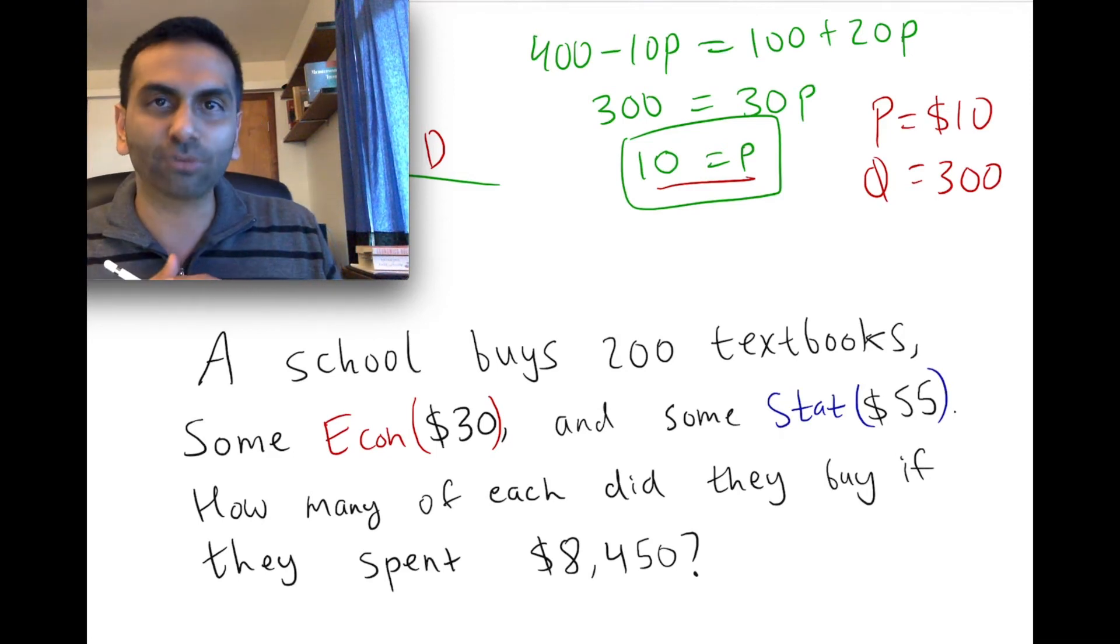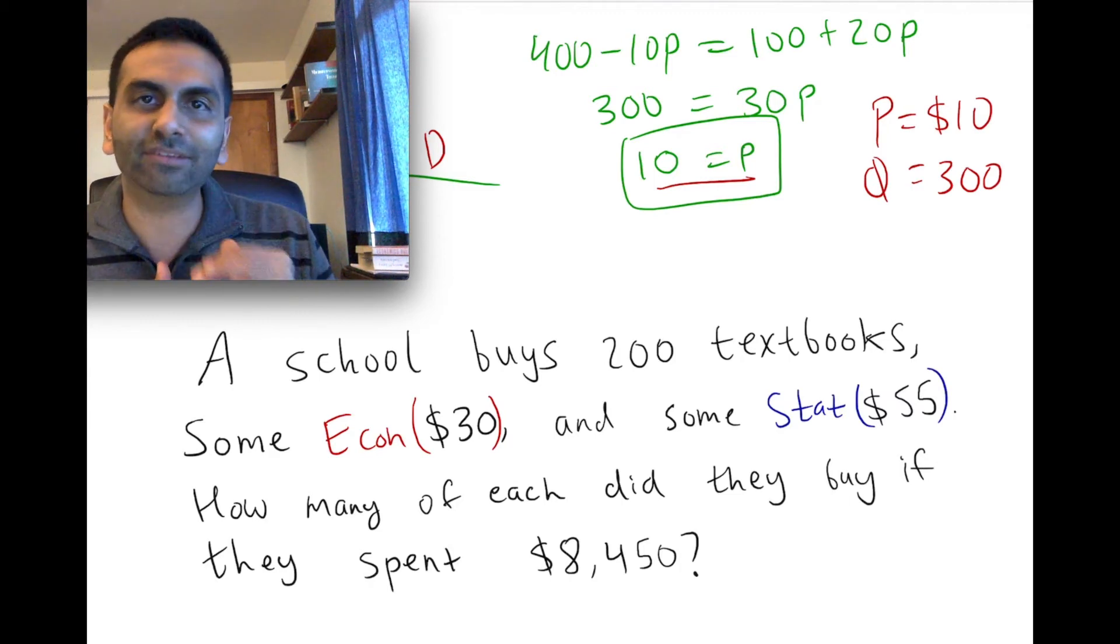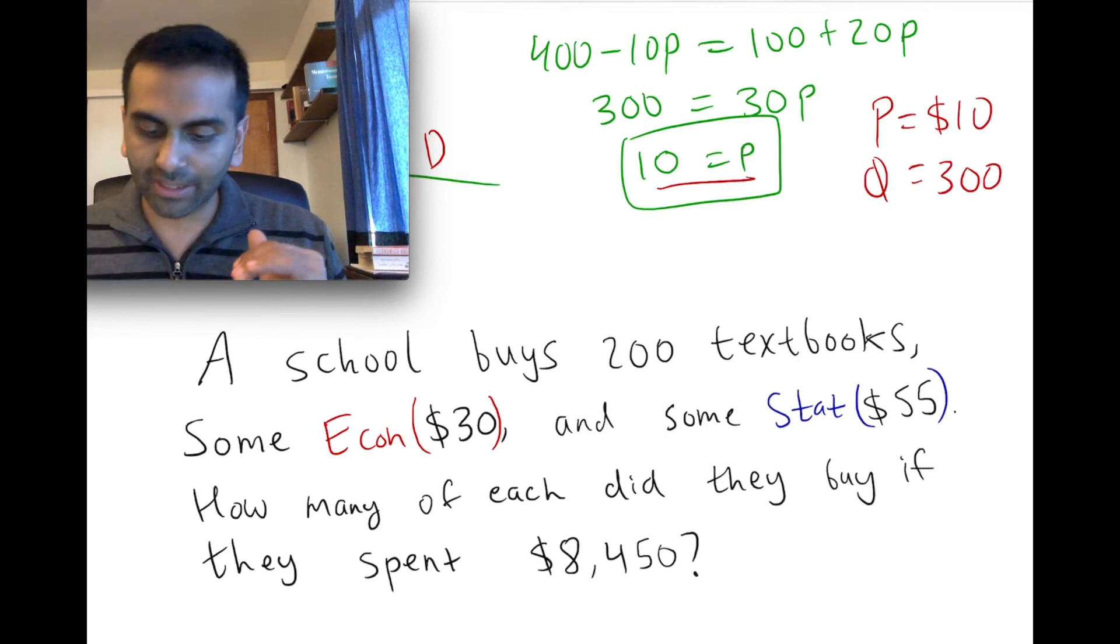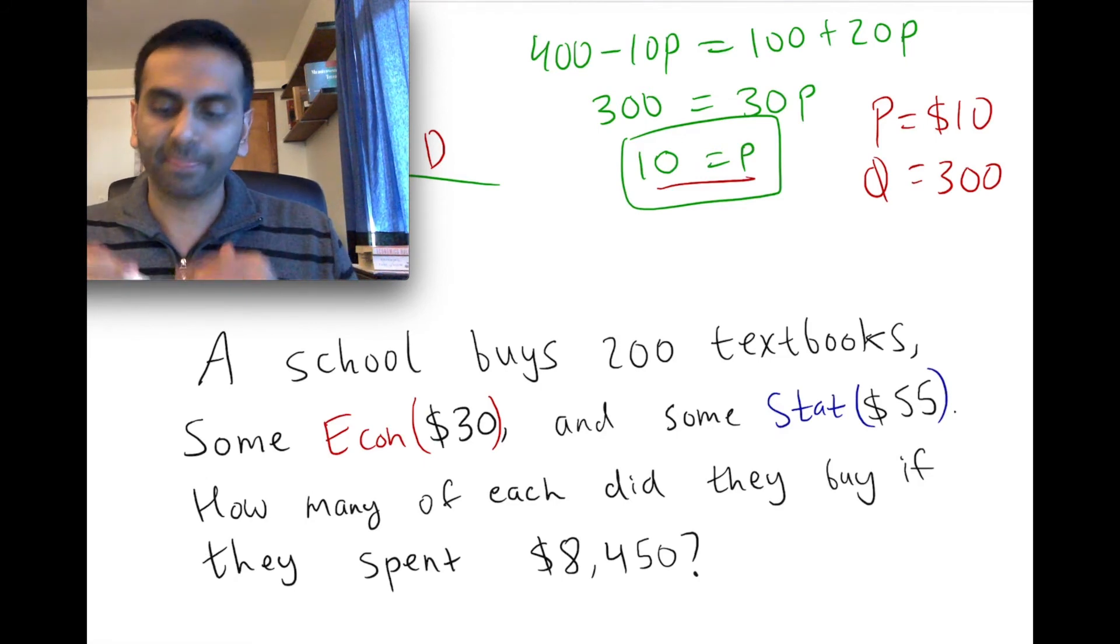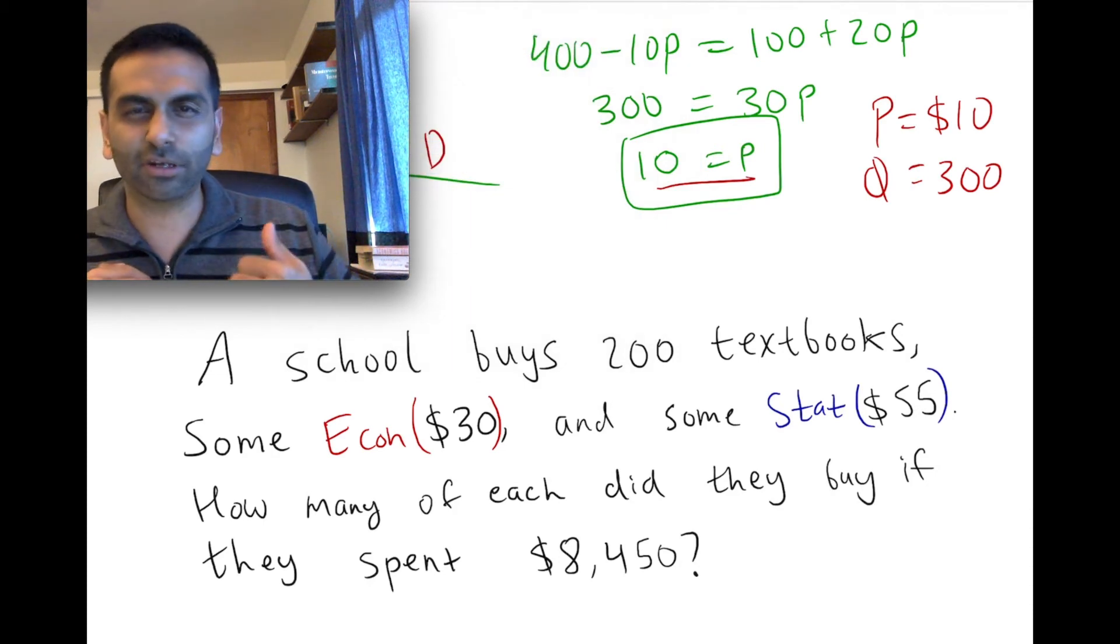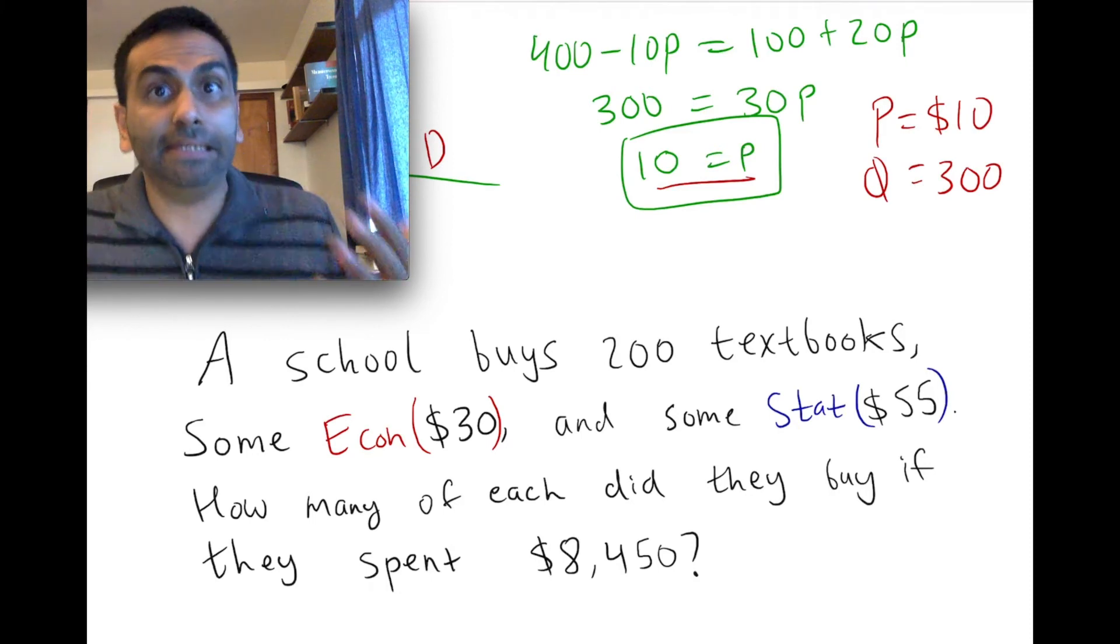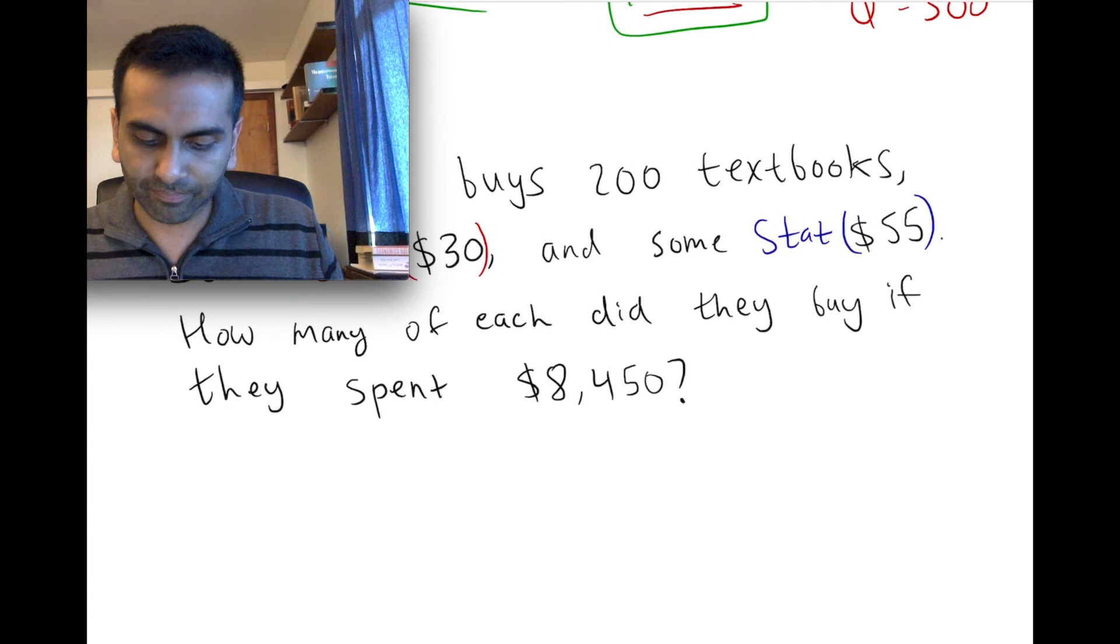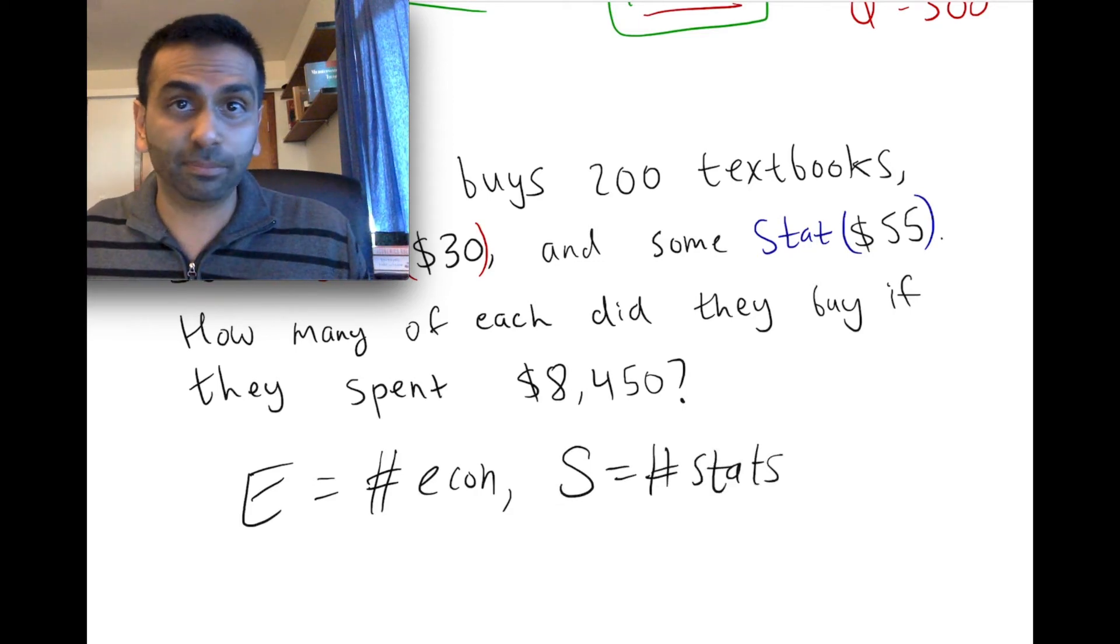So whenever you're encountered with a story problem like this, whether it's talking about books and budgets or whether it's talking about political ideology or really whatever in the world, you want to try to translate that into equations. And so really, this is basically two sentences that's going to basically give us two equations. And so part of that is you need to have that sort of ownership of the material and just be confident labeling things by certain variables. So you could say, for example, I'm going to say E is the number of econ textbooks that they buy.